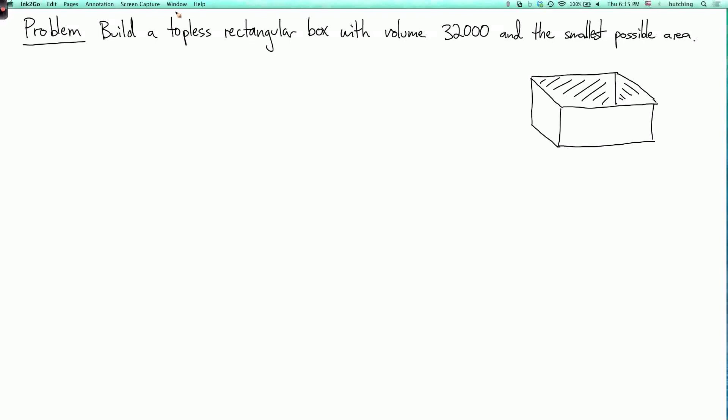We're now going to do one more example of a problem using Lagrange multipliers, and then we're going to explain the meaning of the mysterious scalar lambda. So the problem we're going to solve is to build a topless rectangular box with volume 32,000 and the smallest possible area.